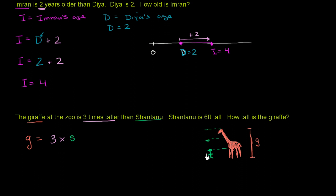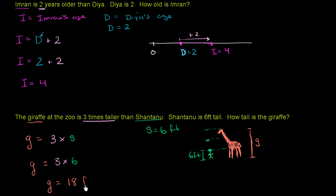Shantanu is six feet tall, so S is equal to six feet. How tall is the giraffe? The giraffe's height is equal to three times Shantanu's height, which we now know to be six feet — so three times six feet. Three times six is 18, so the giraffe's height is 18 feet. Six feet plus another six feet plus another six feet — six feet times three — gets you to 18 feet.